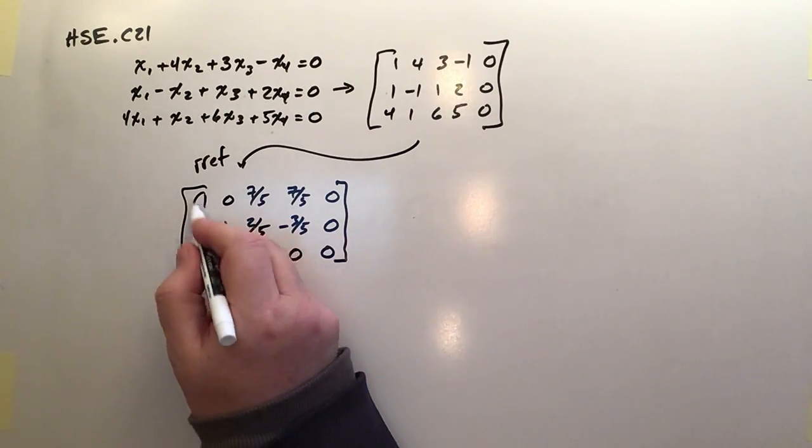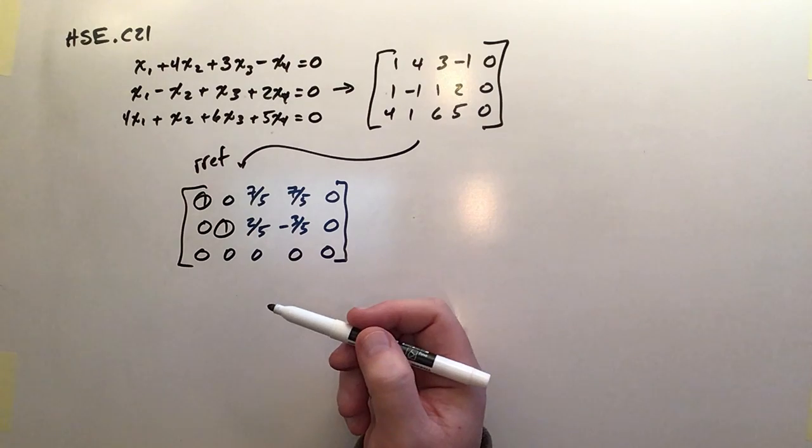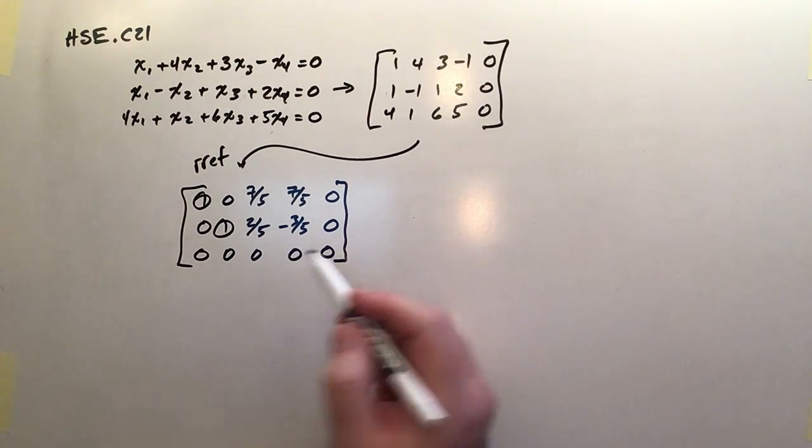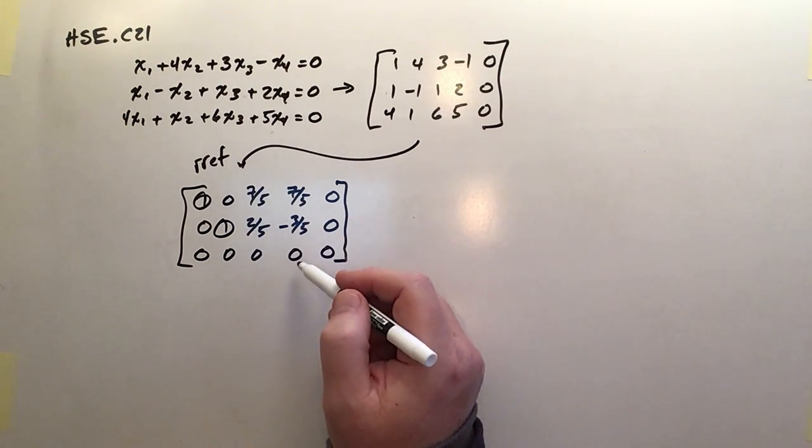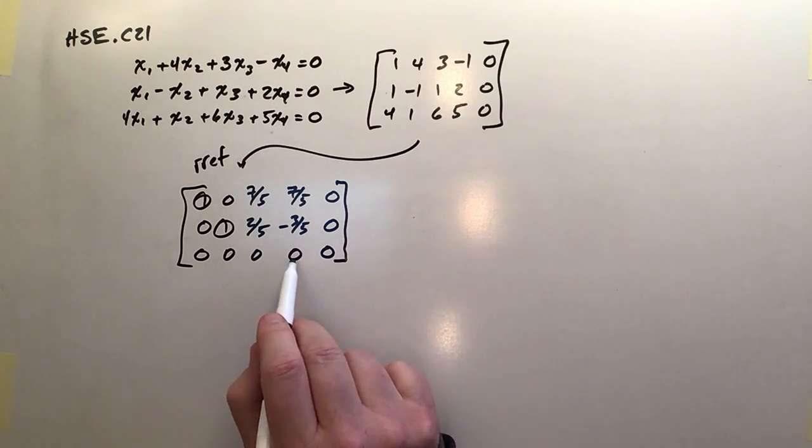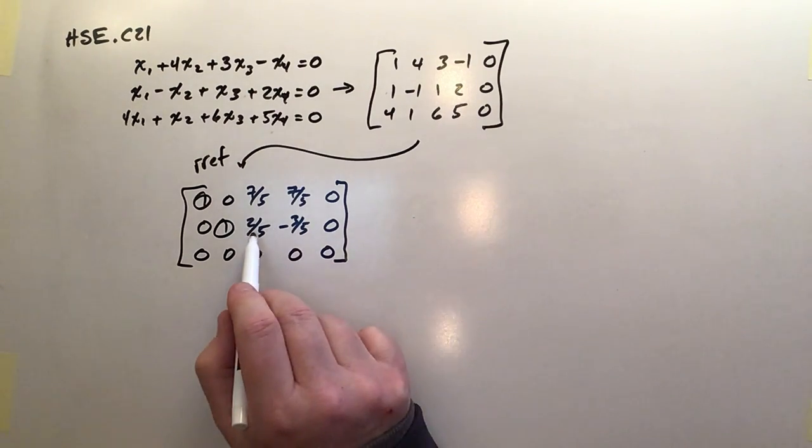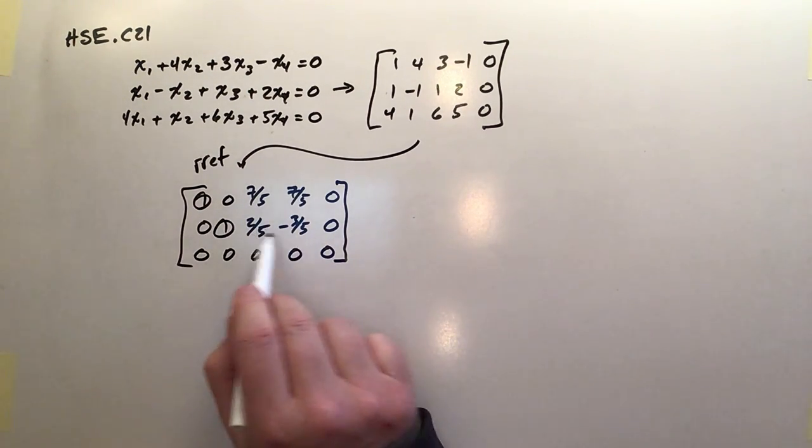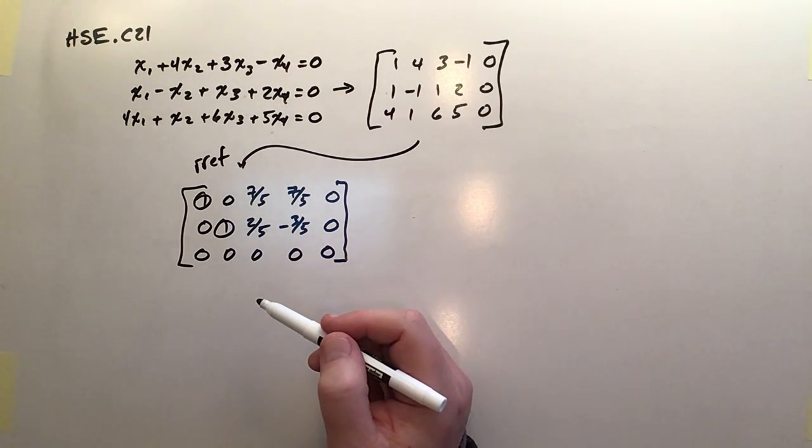So if we look at it, we've got pivot rows in one and two, which means one and two will be our dependent variables. They're going to be dependent upon three and four. I can actually choose anything for three and anything for four because the final equation guarantees that any choices for three and four make the last equation true. And with appropriate choices of one and two, I can make any value of three and four work in equations one and two also.